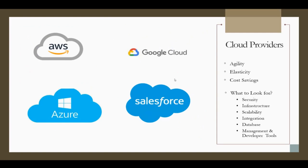When you look at cloud providers, most or all of them have agility — they can adapt and give you resources based on your number of users very quickly. They are also elastic: if you have huge demand they scale up, and if demand shrinks they scale down. And of course there is cost savings — you don't have to maintain your own infrastructure, network team, DBA team, or security team, especially if you're a small company or your business is not software-related.